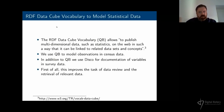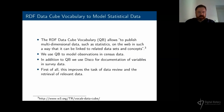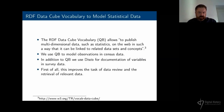Now we go from the metadata level to the level of micro data and macro data. To model statistical data we try to apply the RDF Data Cube vocabulary, which allows publishing multi-dimensional data such as statistics on the web in a way that can be linked to related datasets and concepts. The main task is to model observations in census data — for example measurements such as a count of population in a specific administrative unit. In addition to the Cube vocabulary we use DISCO again for documentation tasks, such as documenting variables in survey data and modeling questionnaire questions.